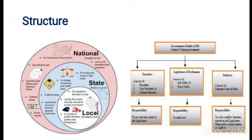The union government or the central government of India has three organs: the legislature, the executive, and the judiciary.